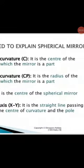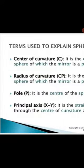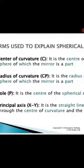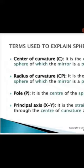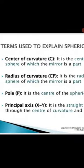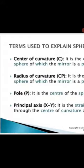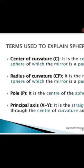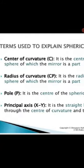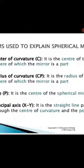Terms used to explain spherical mirrors. First one is center of curvature, radius of curvature, pole, and principal axis that I have already explained earlier in our class. So center of curvature (C): it is the center of the sphere of which the mirror is a part.